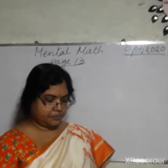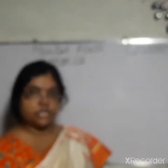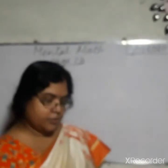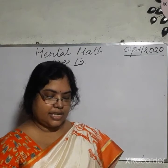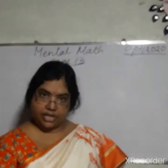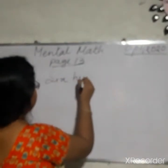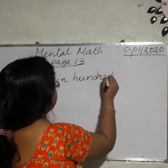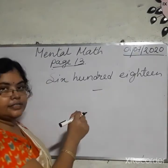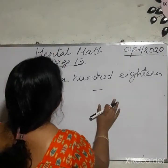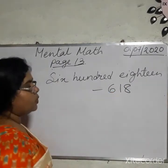You start from number 2. Number 2: write in numerals. That means you have to write in figures — try to write it directly in numbers. 618. 618.